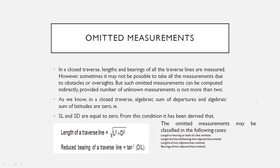Omitted measurements have more than 4 cases. The cases involve finding the length and bearing of omitted lines. There are 4 cases in total.